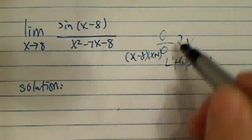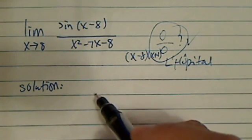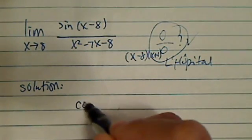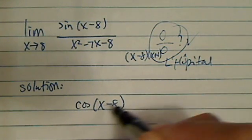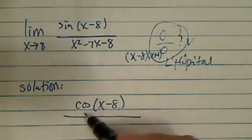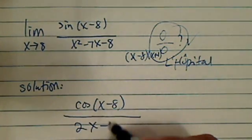And then if the 0/0 form is confirmed, then what you can do is take the limit for the first term, x minus 8, and the limit for the bottom, you have 2x minus 7.